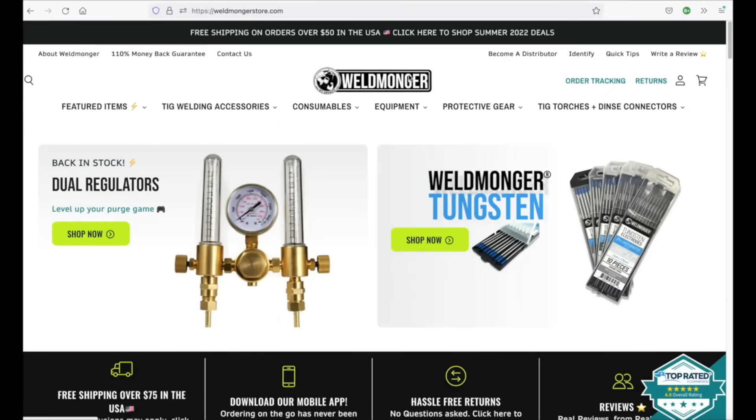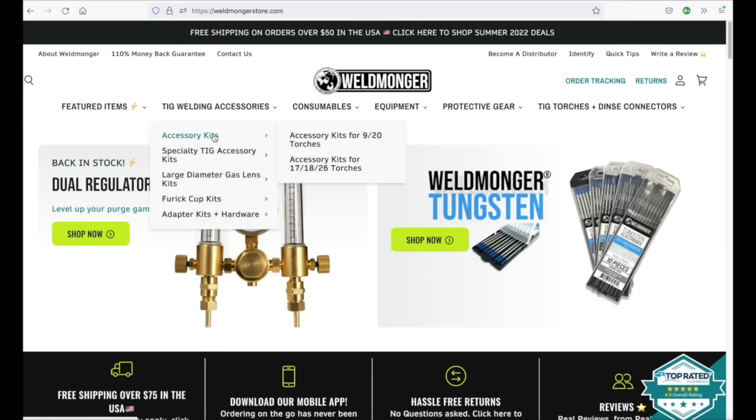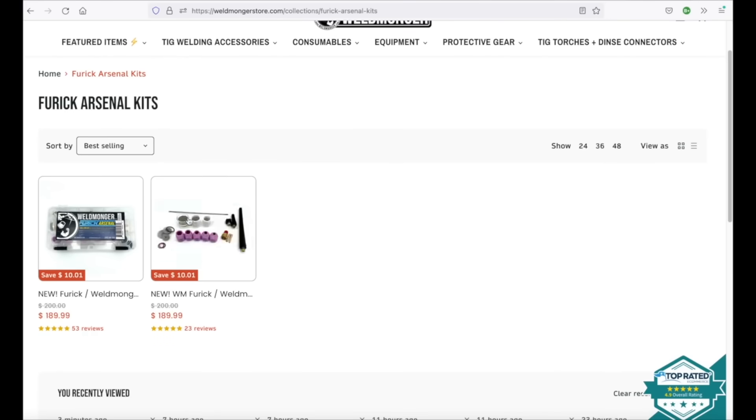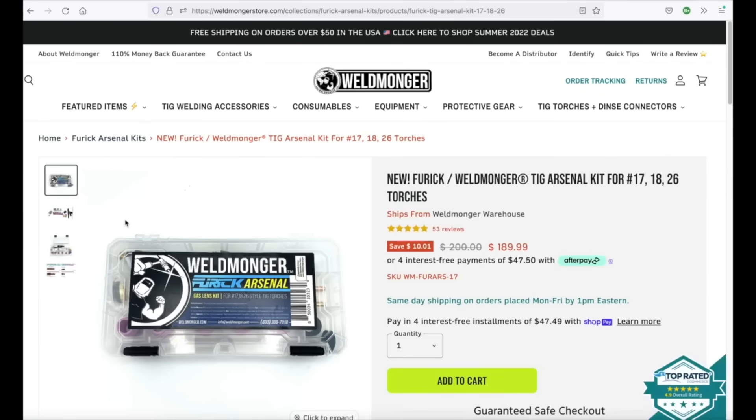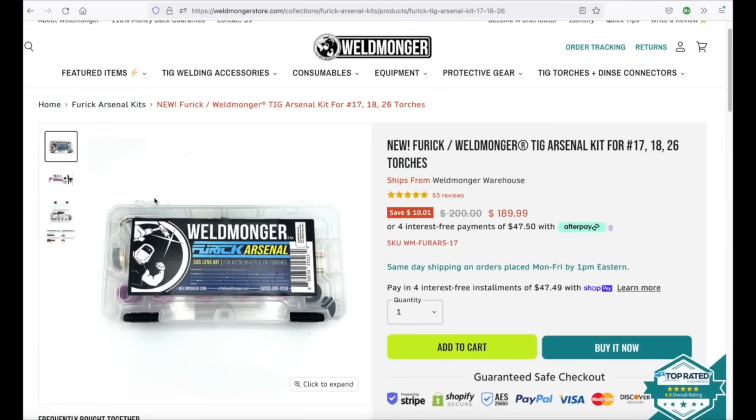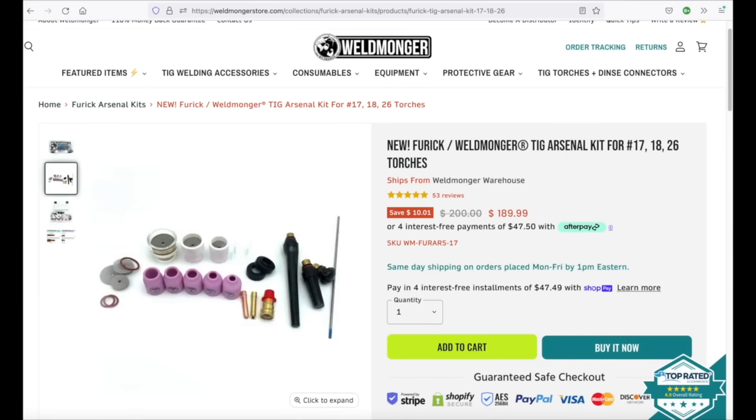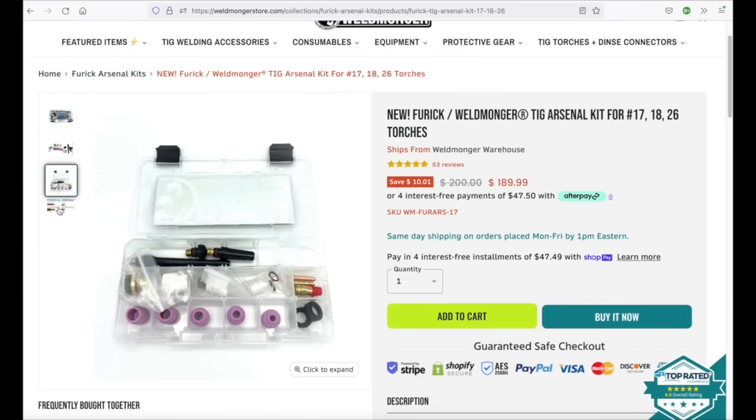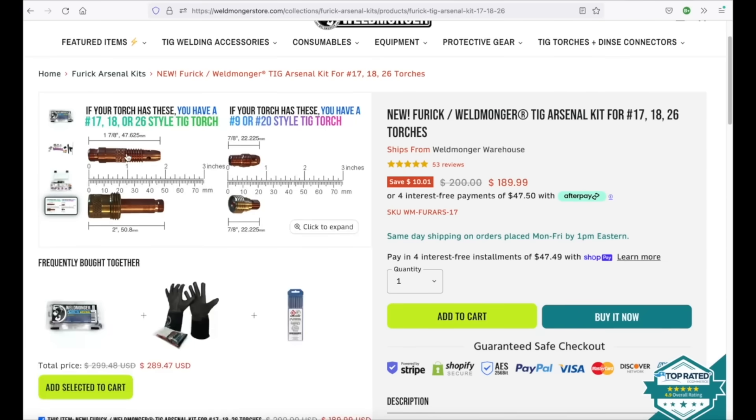If you want to get a closer look just go to weldmonger.com. Go up to TIG welding accessories and then drop down to Furek Arsenal kits and there they are for the 17, 18, 26 as well as for the 9, 20. Once you open that page up there's a few other images that clear things up for you and show you what's inside the kit, all the contents inside the tray. There's another piece of information here to help you make sure you're getting the right one for your torch and then all you got to do is add it to the cart.